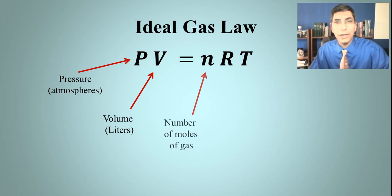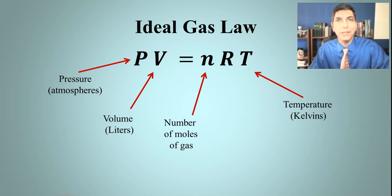n is the number of moles of gas. If we're given something in grams, for example, we've gotten pretty good at converting it to moles. T is the temperature in kelvins. We've gotten practice converting from Celsius to kelvins.